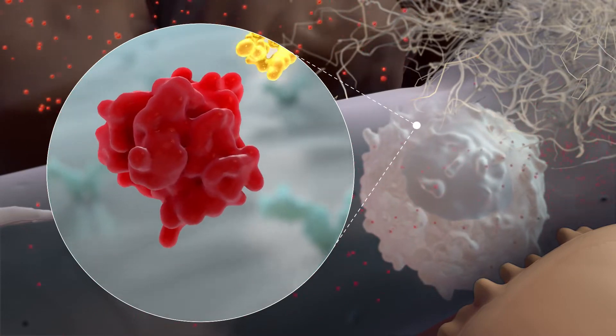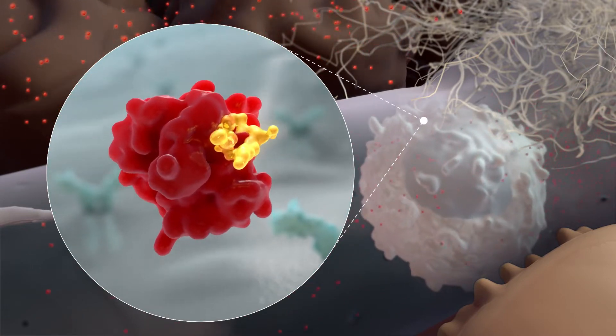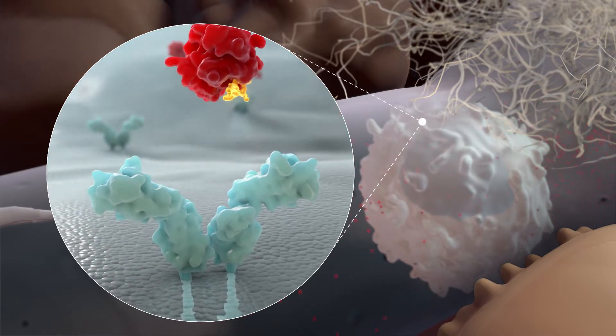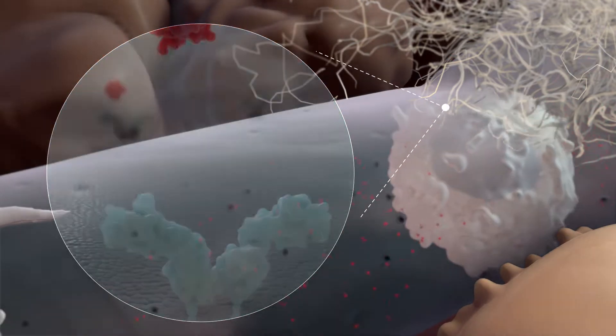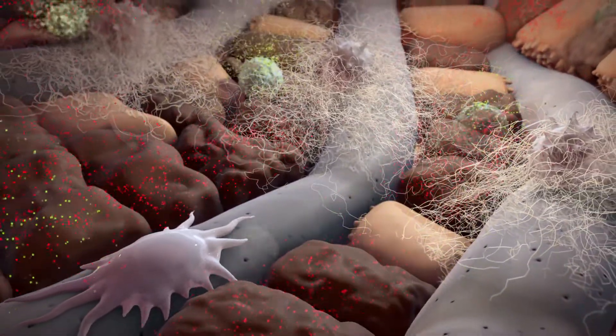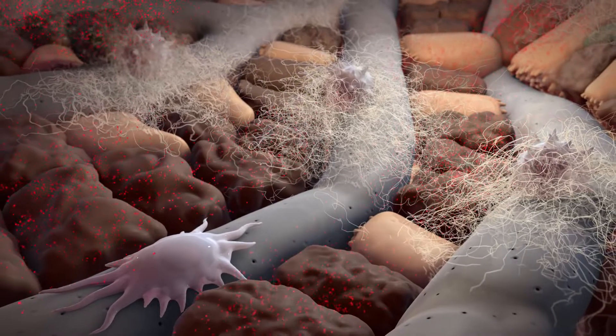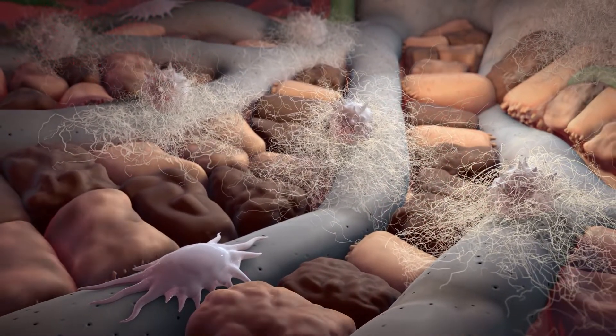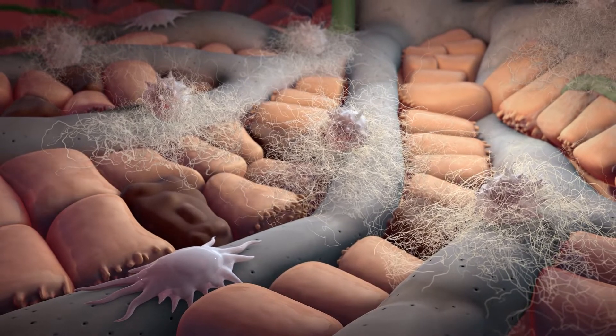CRV431 also binds to cyclophilin A which blocks the binding of cyclophilin A to specific receptors on inflammatory cells. This decreases infiltration of the cells into the tissue and production of harmful inflammatory molecules. As a result, CRV431 reduces inflammatory damage to the liver.